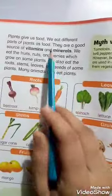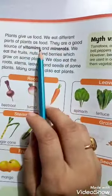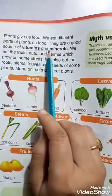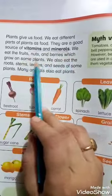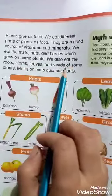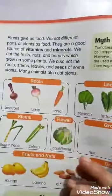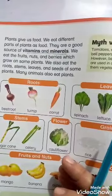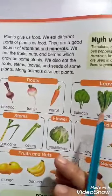Plants give us food. We eat different parts of a plant as food. Plants hume khana deeti hain. They are a good source of vitamins and minerals. We eat fruit, nuts and berries which grow on some plants. We also eat the root, stem, leaves and seeds of some plants. Many animals also eat plants. So first of all we get oxygen, then plants are used for decoration, plants are home, and plants give us food — a good source of vitamins and minerals.